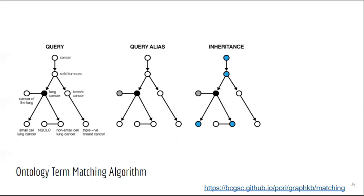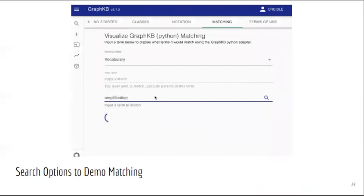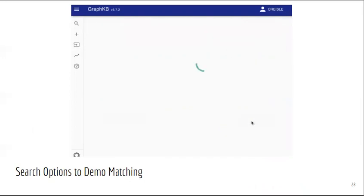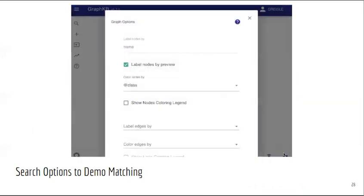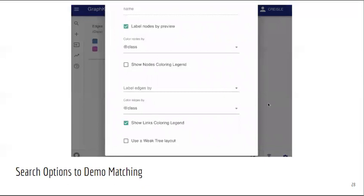The third step follows edges in a directed manner. It collects all of the paths along the inheritance-like edges, in this case subclass edges, where the path contains at least one of the previously matched vertices. It is important in this step that the edges are followed directionally to avoid inclusion of sibling terms. This means that we have now matched the terms 'solid tumors' and 'small cell lung cancer,' but not the term 'breast cancer.' Finally, the aliasing step is repeated on the vertices collected in the previous step. To ensure that this process is transparent, we've included an interactive view in the GraphKB client for users to visualize this matching algorithm with any input of their choice, and they are able to view the results through the graph view of the GraphKB client application to further explore and visualize the relationships between terms.